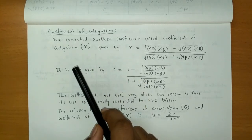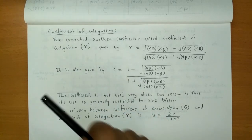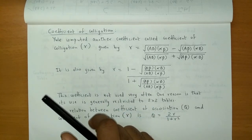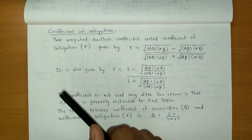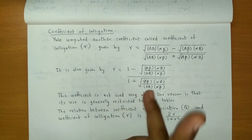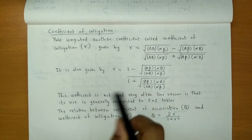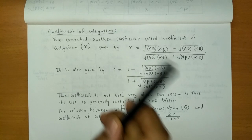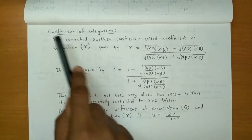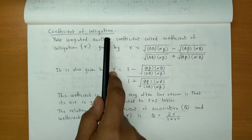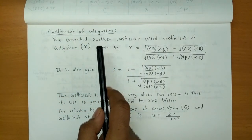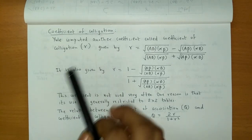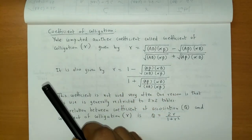For example, Gender can be divided into Male and Female. If we talk about Literacy, it will also be split into Literate and Illiterate. So, this is a restriction of the Coefficient of Colligation — it applies only to Binary Variables.